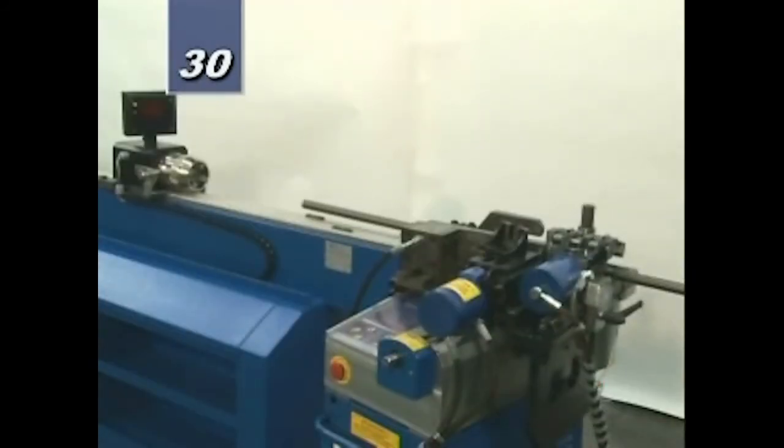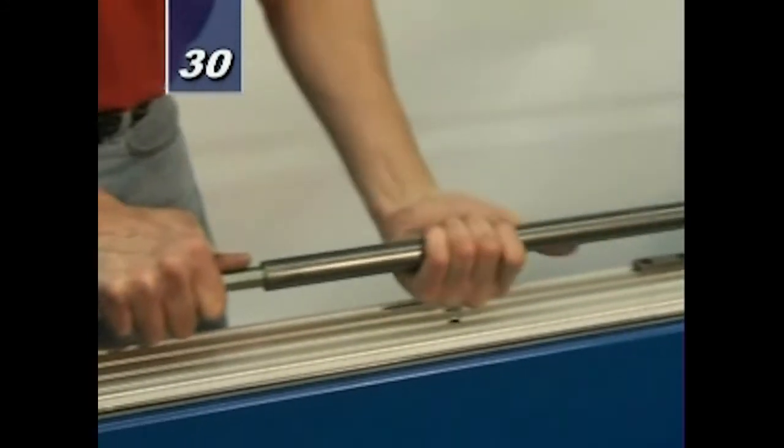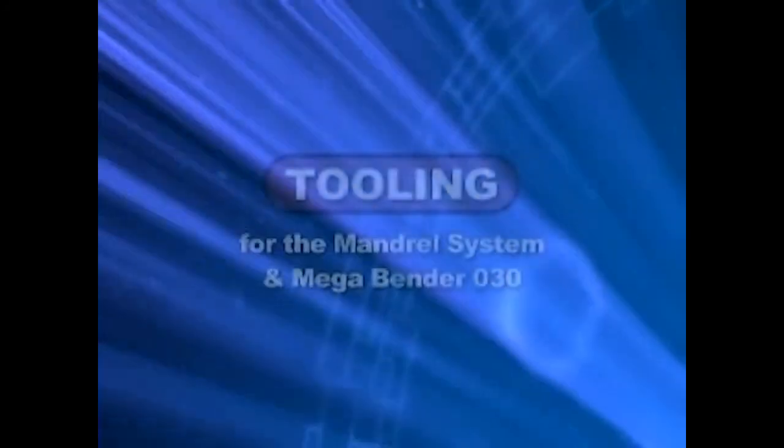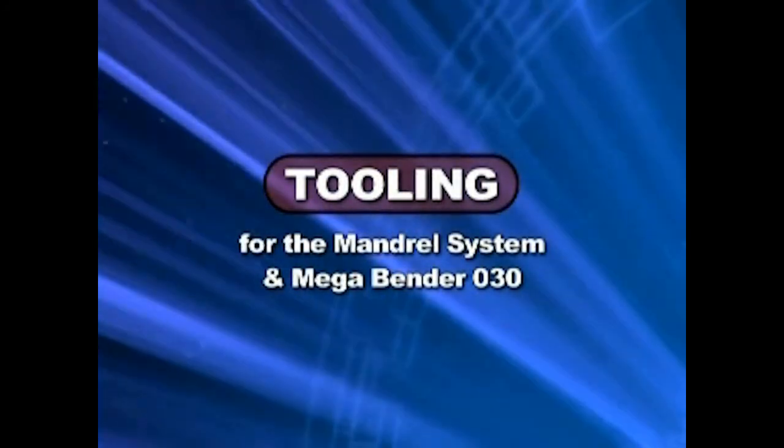Slide mandrel draw bar through chuck and secure it to threaded rod located on rear cylinder. The mandrel and megabender are now ready for tooling.